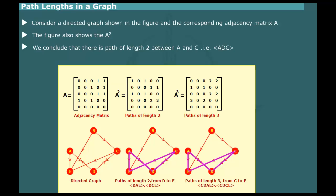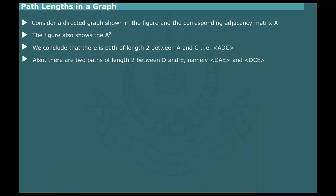This is, in fact, the path A-D-C. Also, there are two paths of length 2 between D and E. These are D-A-E and D-C-E, shown with bold arcs.